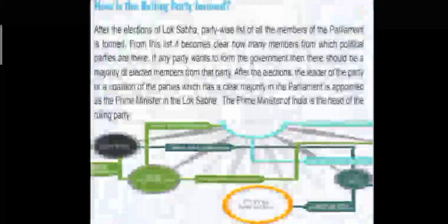The Prime Minister of India is the head of the ruling party. Once the elections for the Lok Sabha are over, the winning representatives are listed. All these representatives are part of one or the other party, or they might be individual representatives. The candidate who gets the maximum number of votes and the party that has majority in the parliament forms the government. The candidate with majority votes becomes the head of the ruling party and is appointed as the Prime Minister.